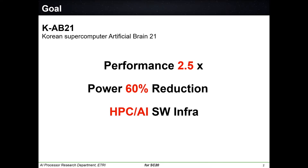The software infrastructure includes high-performance computing as well as artificial intelligence applications. We need to support OpenCL and OpenMP, which are industry standard APIs. We also wanted to support PyTorch and TensorFlow, which are widely known AI training frameworks.